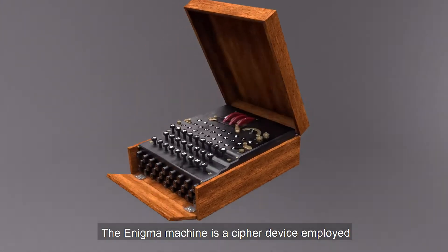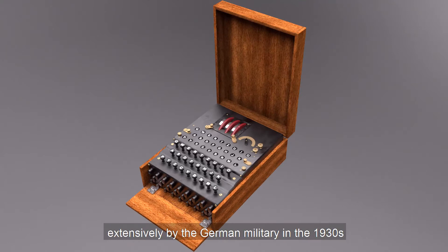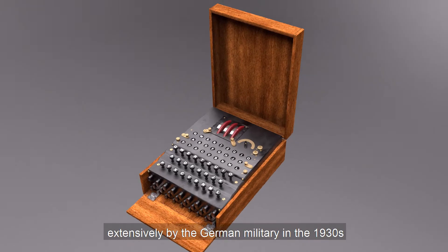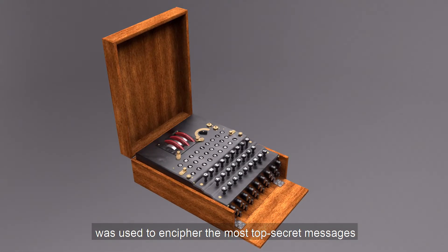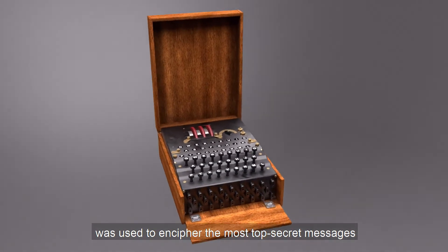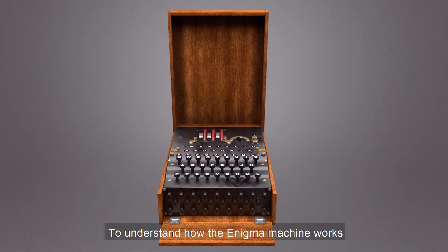The Enigma machine is a cipher device employed extensively by the German military in the 1930s. The Enigma machine was considered so secure that it was used to encipher the most top secret messages. To understand how the Enigma machine works, let's think about a simple scenario.